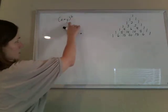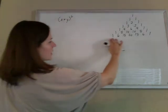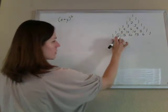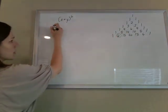Okay, so I have x plus y to the 6th. I'm going to take that row that starts with the 6 and I'm going to write them going down.